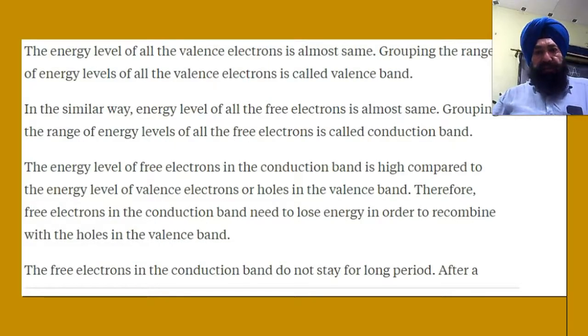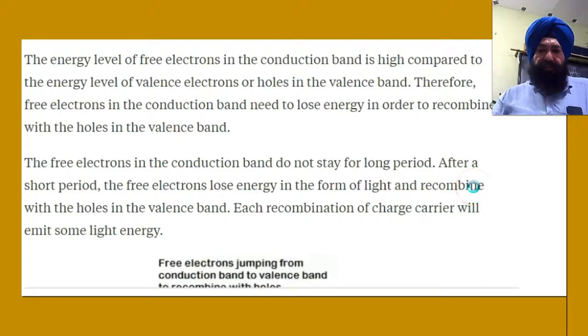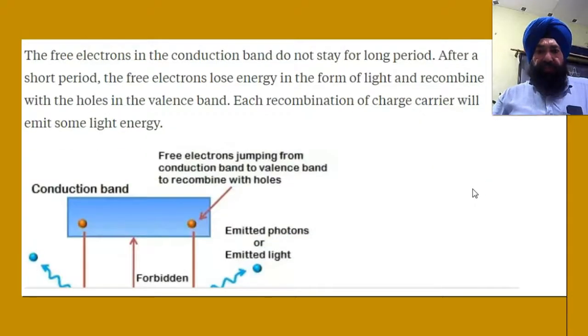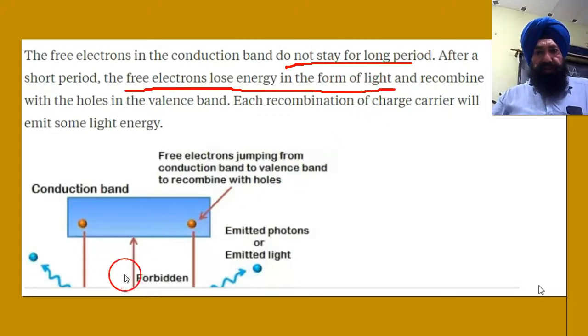Here I explained what is valence band, what is conduction band. All this you have to write in theory. Free electrons in conduction band have more energy. They have to come back to valence, combine with holes. The energy is released. Free electrons can stay in the band for some time. The energy will lose in the form of light.